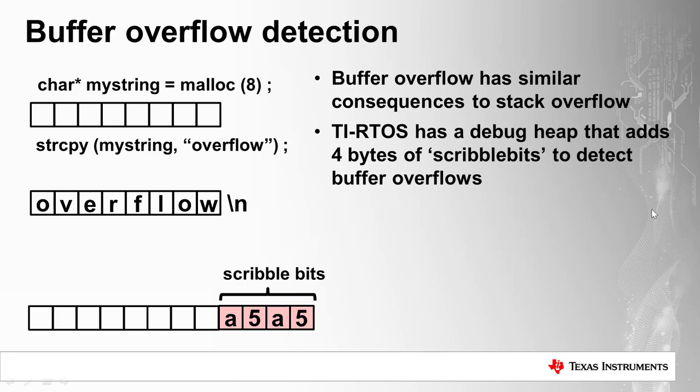We'll also demonstrate the buffer overflow detection capability in the next demonstration. For embedded applications using static buffer creation rather than dynamic allocation, you could employ a very similar technique using a C++ class that adds scribble bits to the end of each buffer and checks for overflows — so even with statically created buffers, you can still catch these overflow problems.